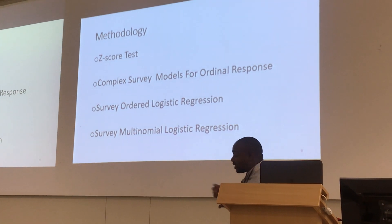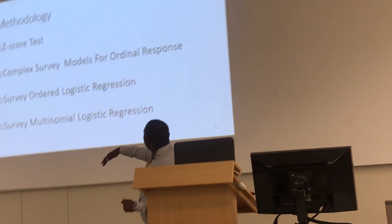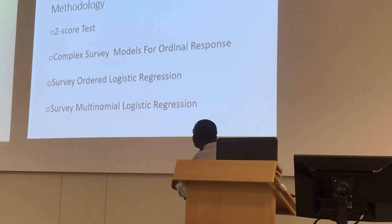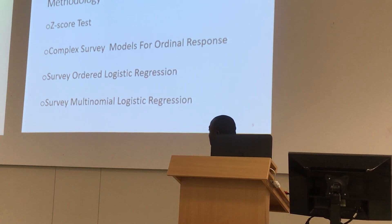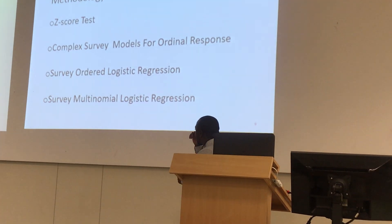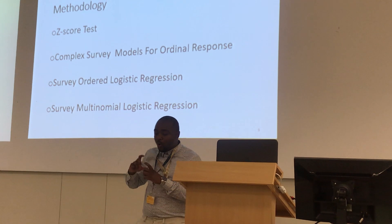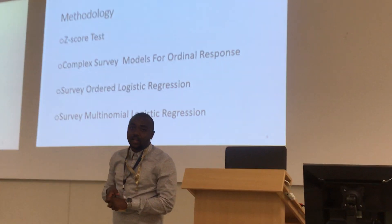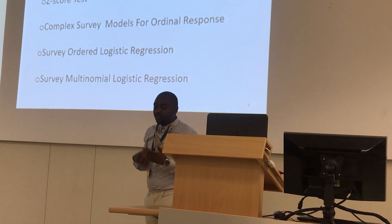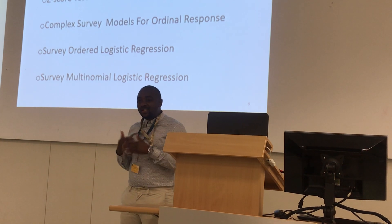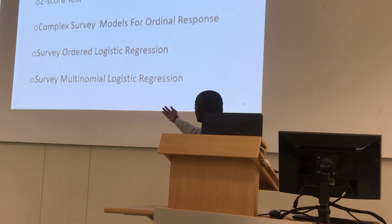When fitting my models, I need to consider that I'm dealing with complex survey design data. So I used the survey ordered logistic regression and also the survey multinomial logistic regression. The survey ordered logistic regression takes into account the order of the response variable. The survey multinomial logistic regression treats the response variable as nominal, meaning it does not take into account the ordering.